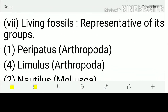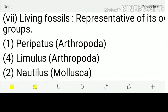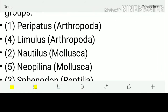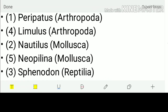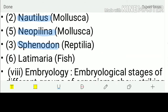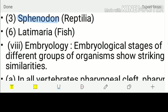Living fossils are representatives of their own group. Important living fossils: Peripatus and Limulus (also called King Crab) are in Arthropoda. Nautilus and Neopilina are in Mollusca. Sphenodon is in Reptilia. Latimeria is a fish that is also a living fossil. This topic is very important for competitive exams.